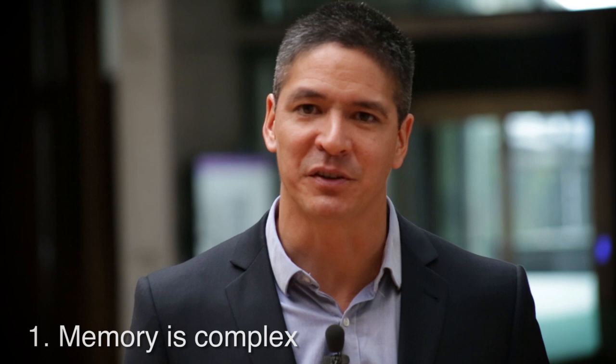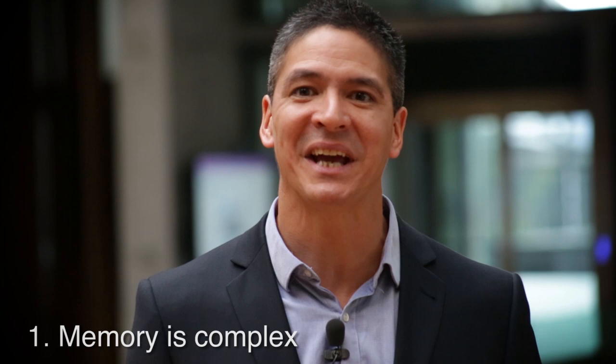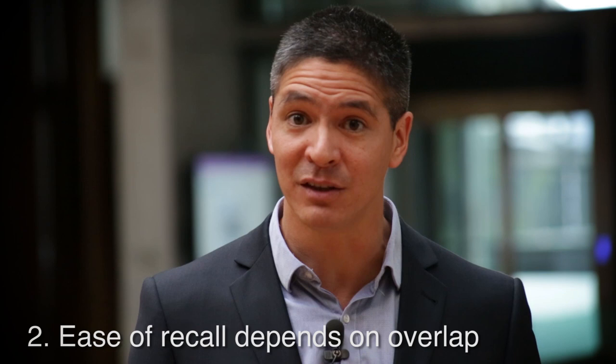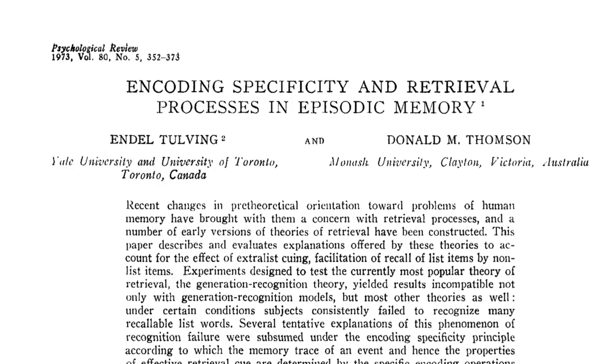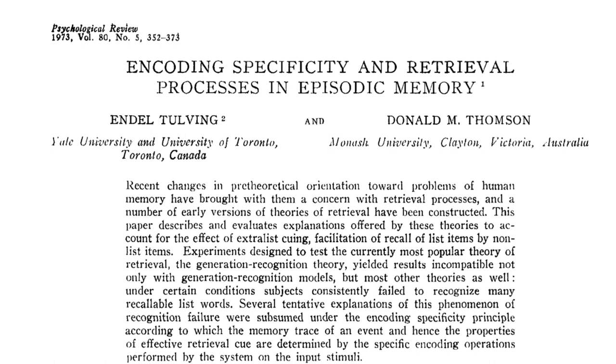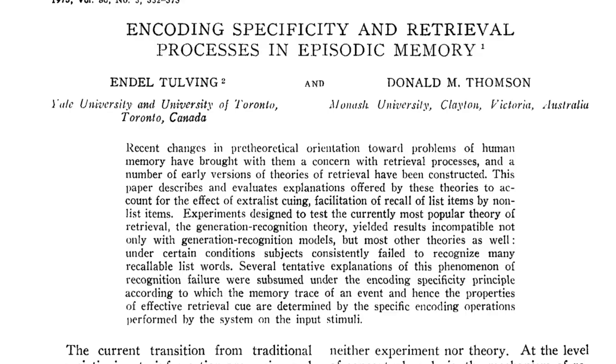First, memory research tells us that memory traces are usually complex and contain different sorts of information. Second, research indicates that the ease with which a memory is recalled depends on how much informational overlap it has with the cues being used to retrieve it. This refers to work on what's known as the encoding specificity principle by Endel Tulving of the University of Toronto, amongst others.